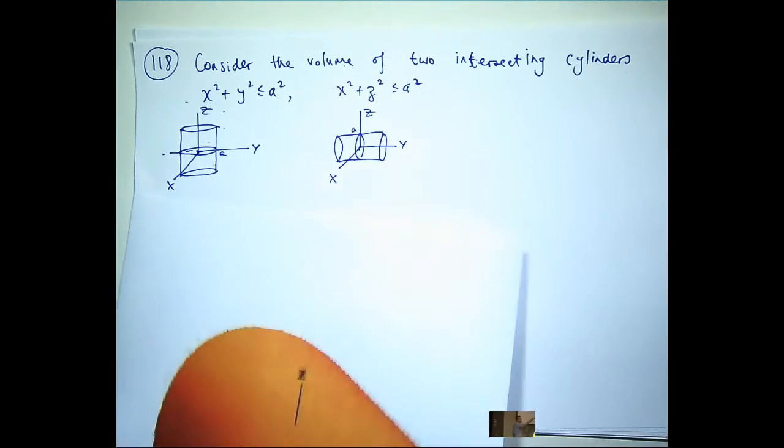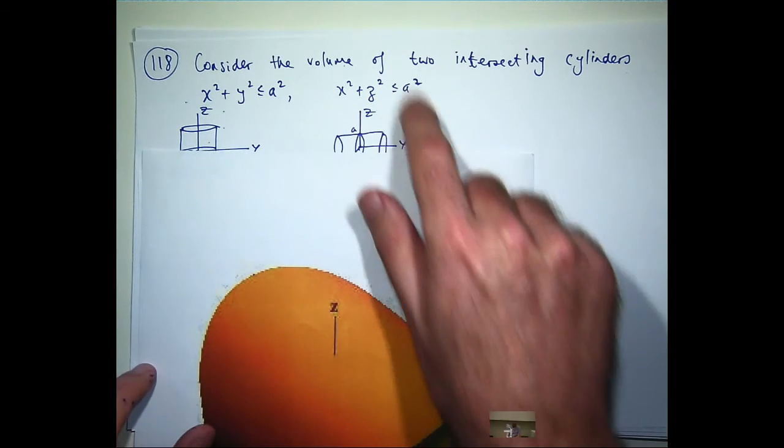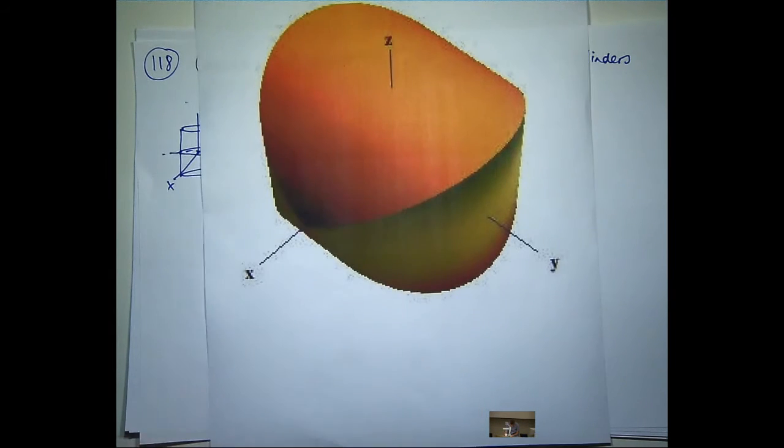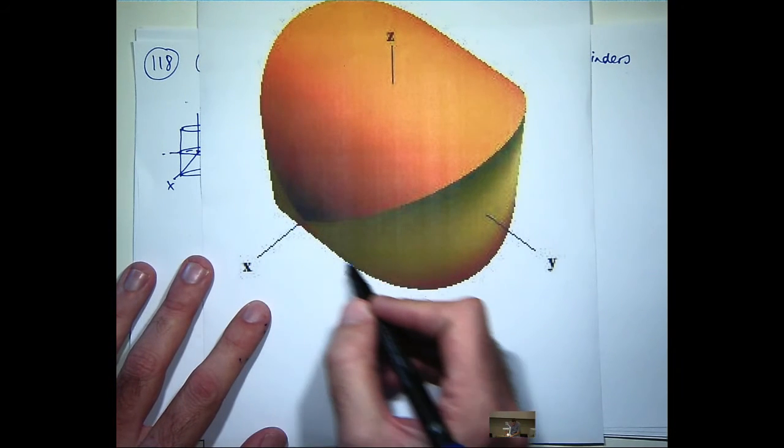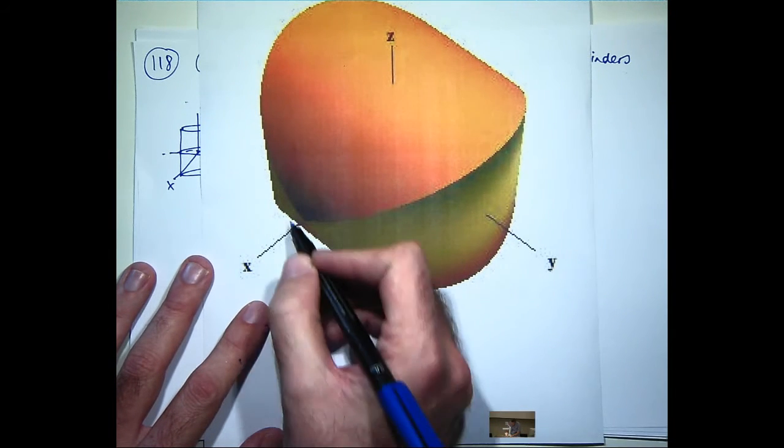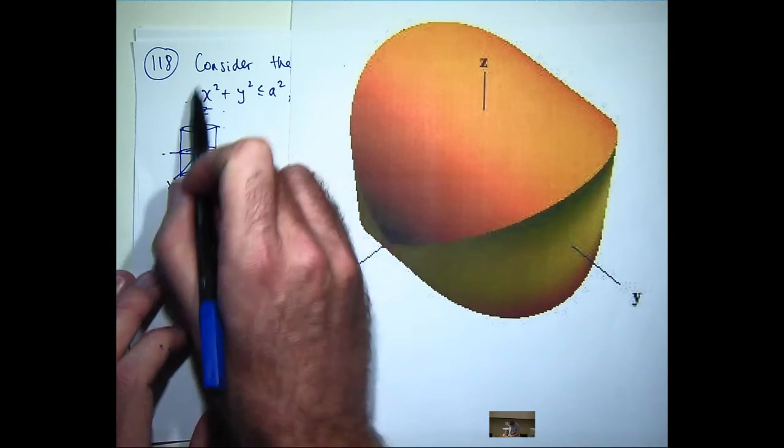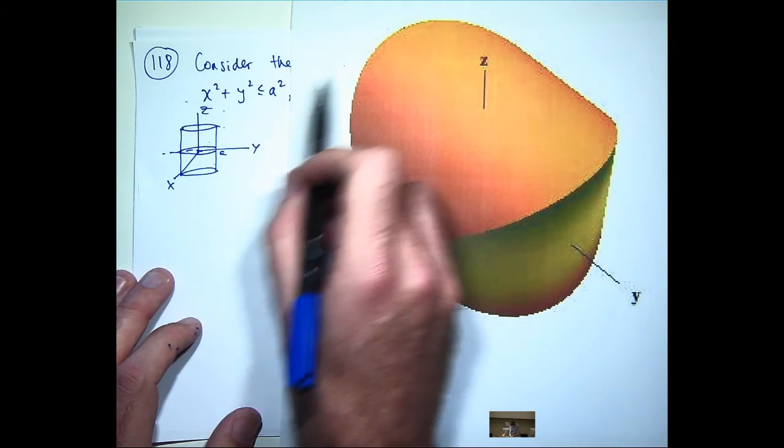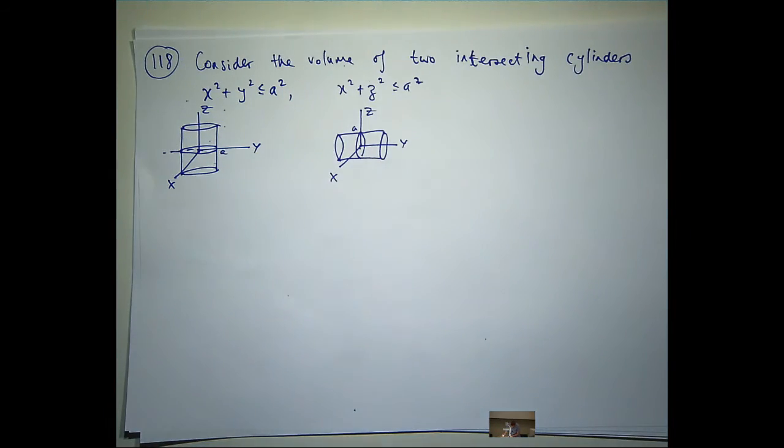Now, what is this curve here? This is the upper bounding surface for z. Well, we can get it from here. It's going to be z is less than root a squared minus x squared. What about the bounding curve for y? Well, if we look at this curve, this is certainly going to bound y. We can get that from just rearranging this, making y equal to root a squared minus x squared.